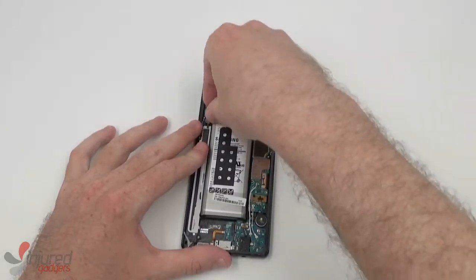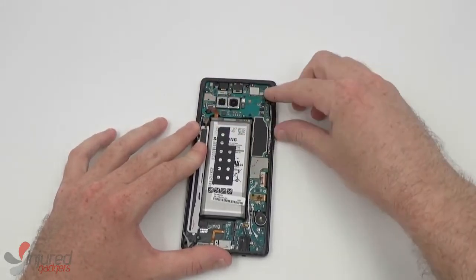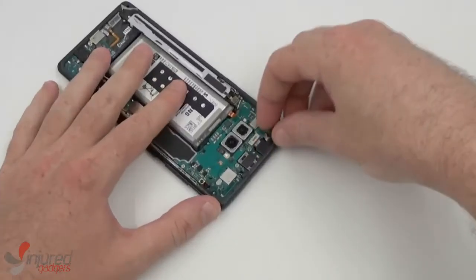Now we'll go ahead and disconnect the battery first, and then move on to disconnecting the proximity camera and iris scanner.